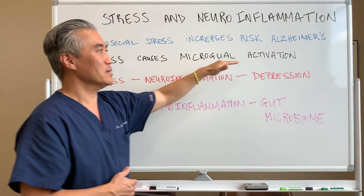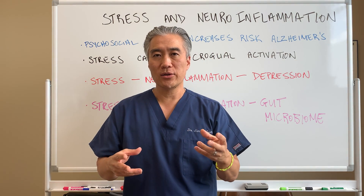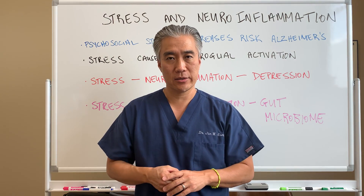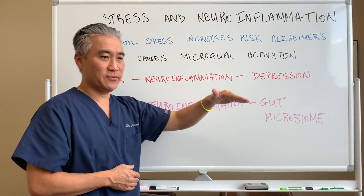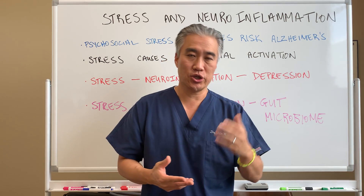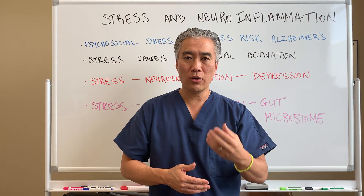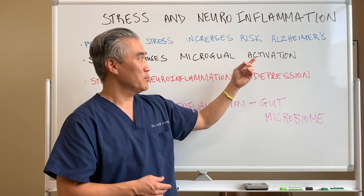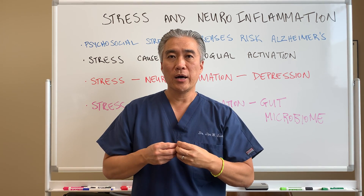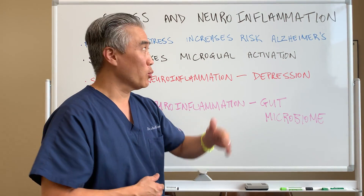Stress causes microglial activation. Microglia are the immune cells of the brain — they clean up damage and oxidative stress that can occur in the brain. Stress causes microglial activation, which will in turn create more inflammation. For example, if you were in a car accident and had a concussion, over time stressful events will trigger microglia that may have already been activated by the concussion. The immune cells will start to overreact, and stress can impact that, creating more degenerative changes in the brain and causing more neuroinflammation.